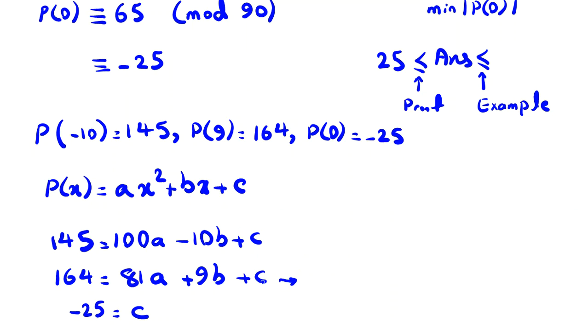Now here, if I replace c with -25 and take -25 to the left hand side, it will be plus 25. 25 + 164 will be 189. So it will be 81a + 9b, this part.